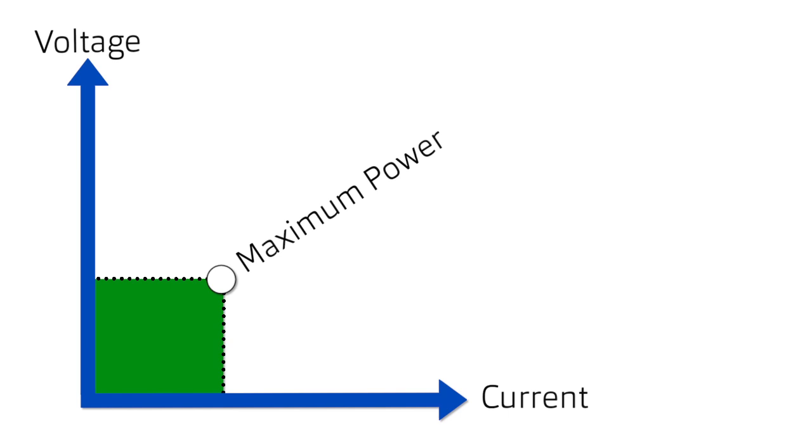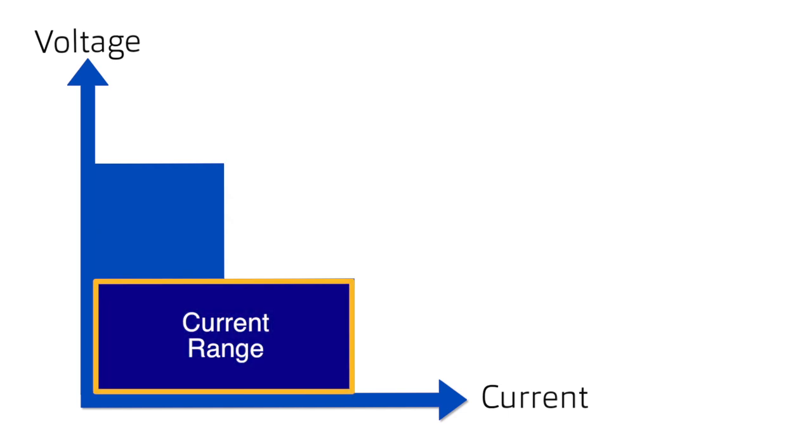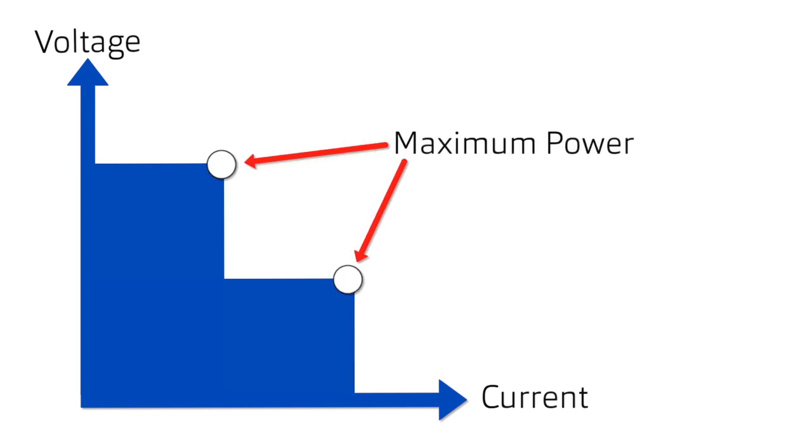Let's look at dual-range power supplies to get a better understanding of this concept. Dual-range power supplies let the user extend the voltage or current range and offer two points where the maximum power is available.